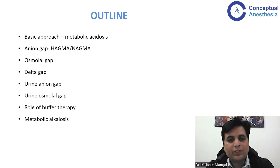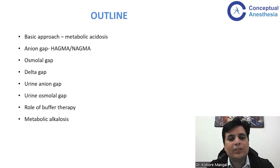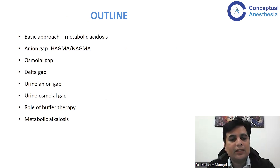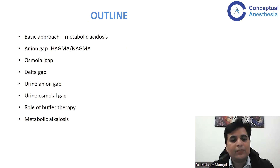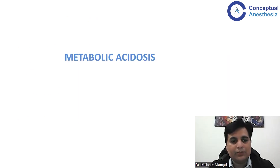For this lecture, the outline of my presentation would be about a basic approach to metabolic acidosis and alkalosis, anion gaps, what is high anion gap metabolic acidosis, normal anion gap metabolic acidosis. We will also be talking about some gaps like osmolar gap, delta gap, urine anion gap, urine osmolar gap, the role of buffer therapy, and lastly about metabolic alkalosis.